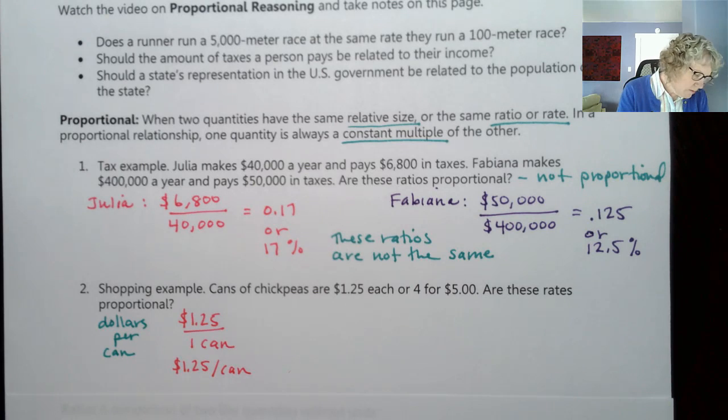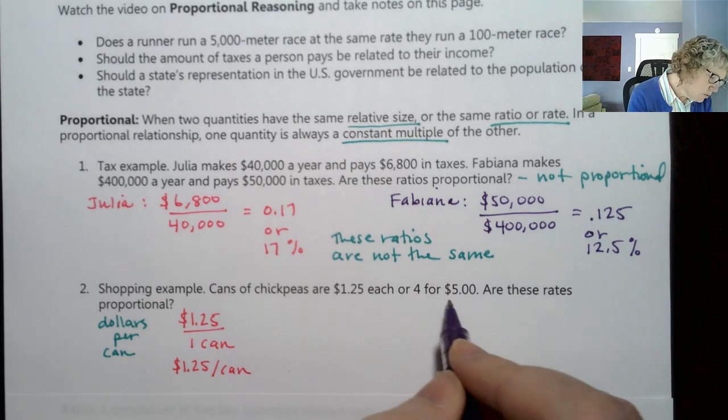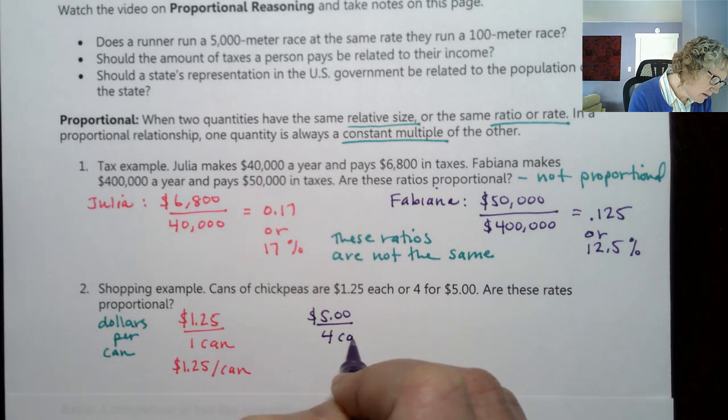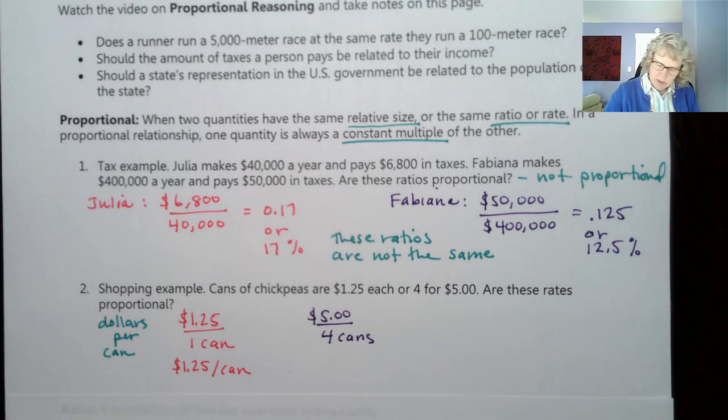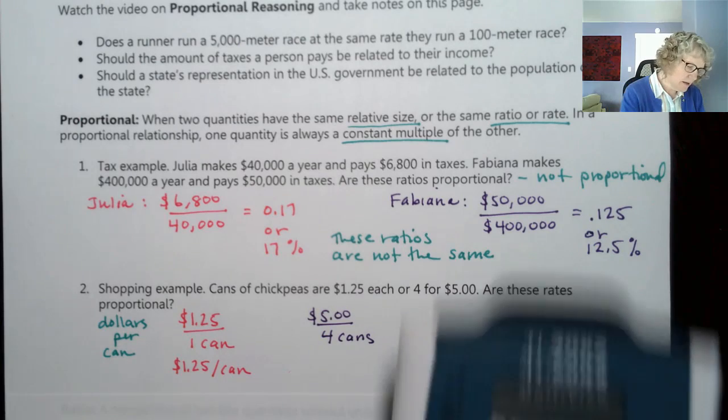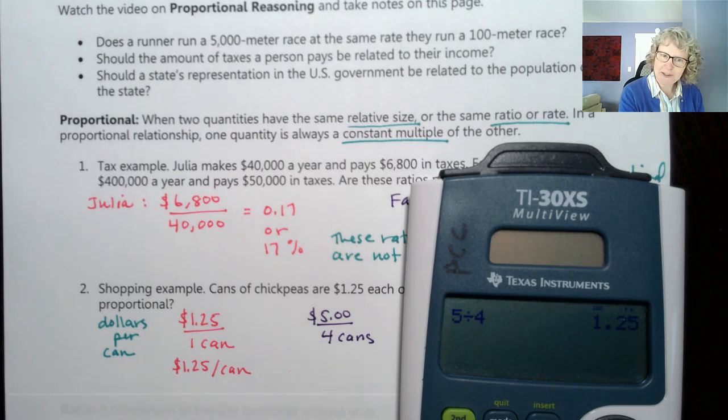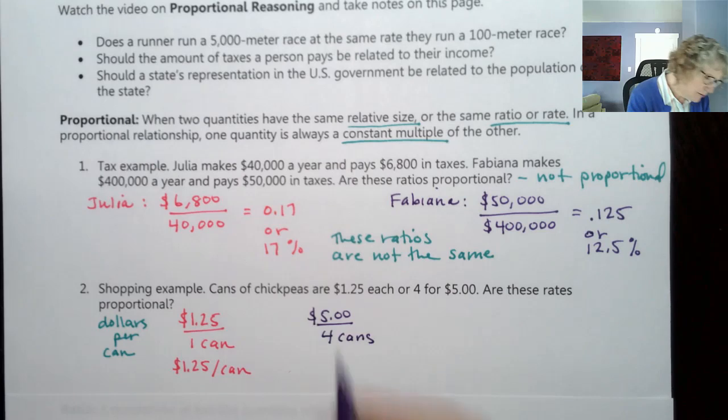So we don't have any division to do there. But we could write it as $1.25 with a slash per can, like that, which means the same as each. Or let's do our four for $5. So we're going to do the $5 for four cans. So now I can divide this. Five, and I can put the zeros or not because zeros after decimal don't change the value. Five divided by four is $1.25. So it is the same.